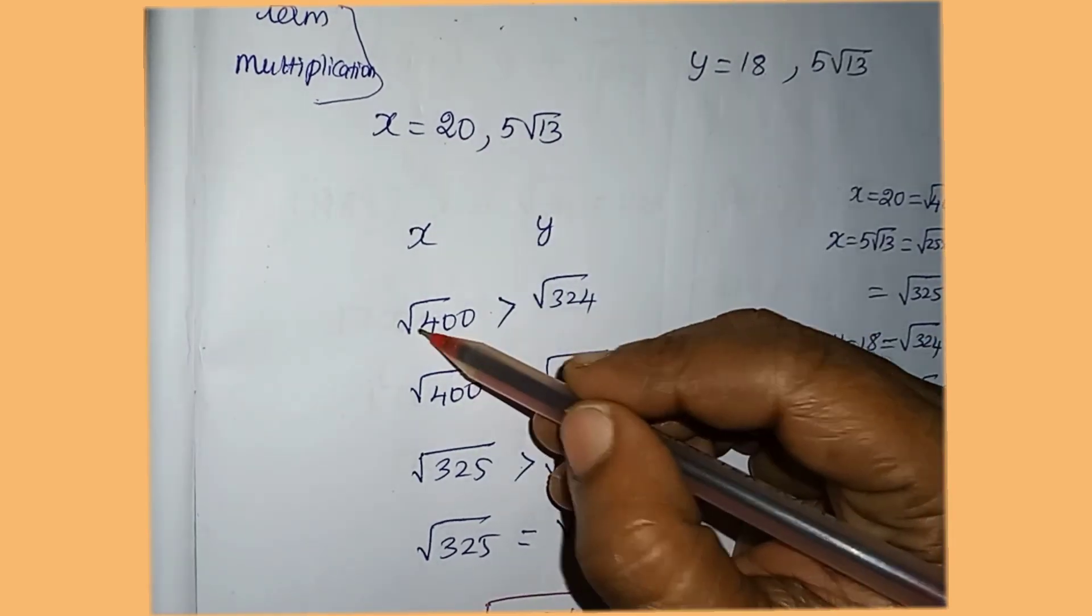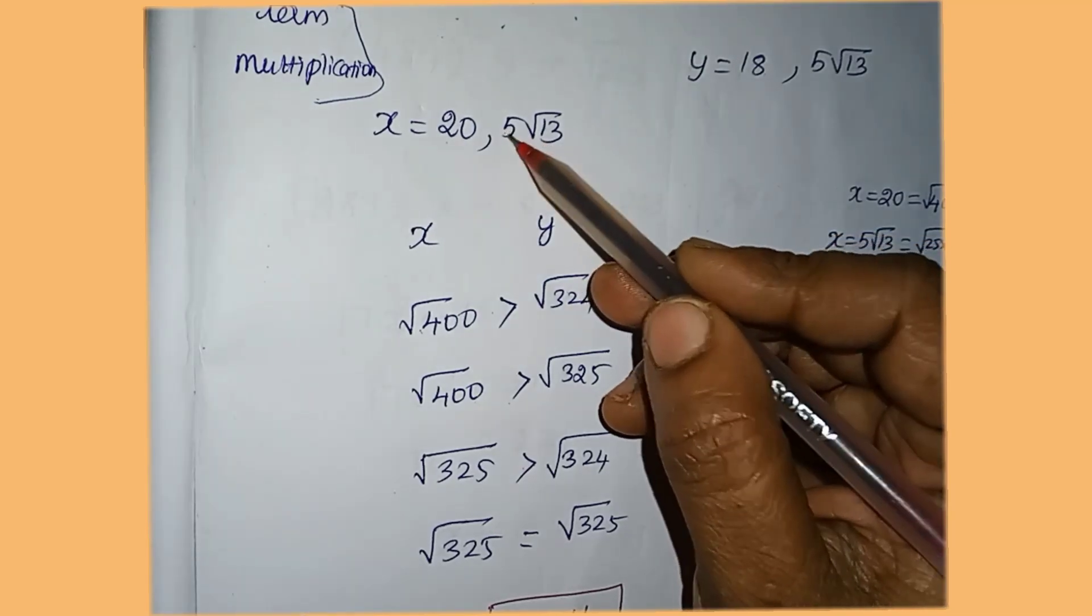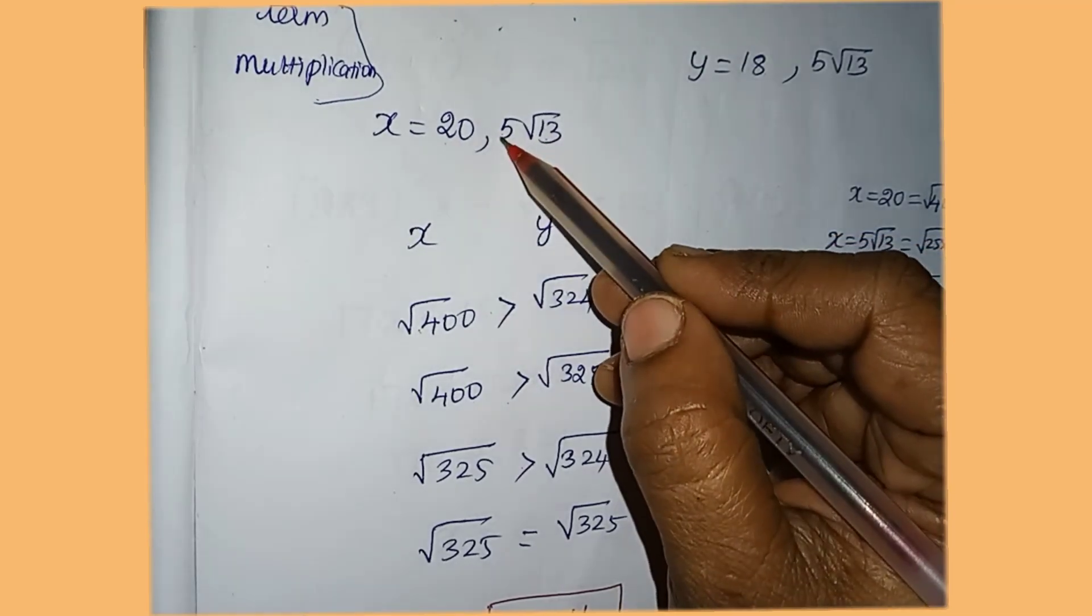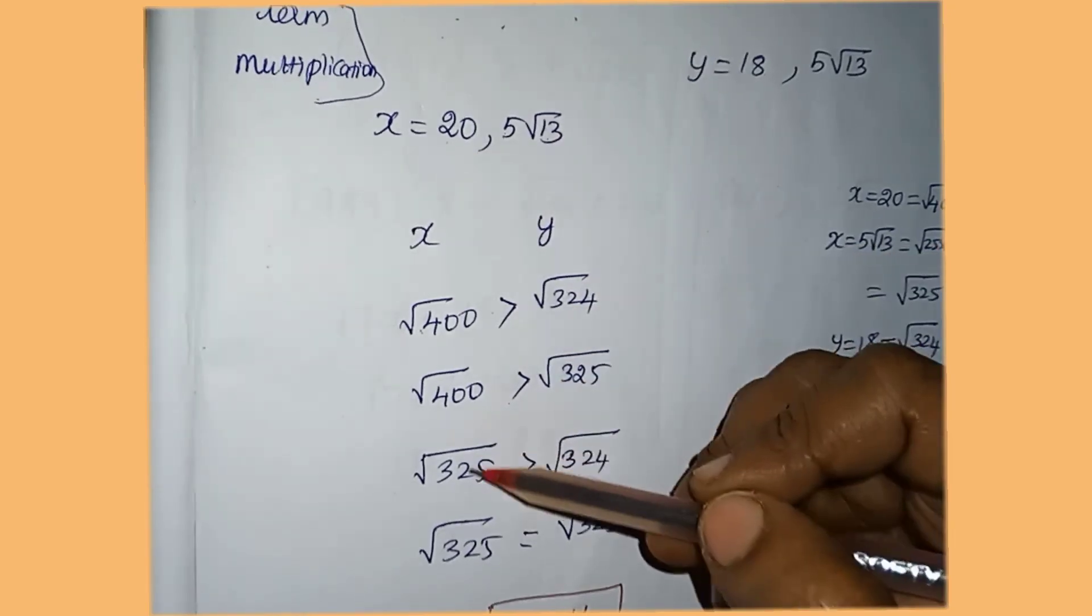This value is 5 times 5 is 25. What do we get? We multiply by root 25 and multiply by root 25.